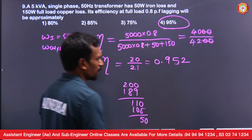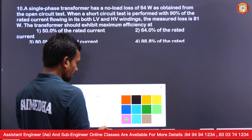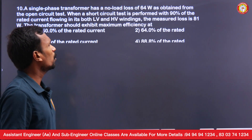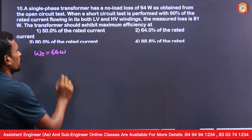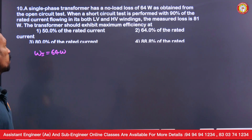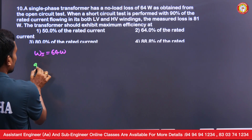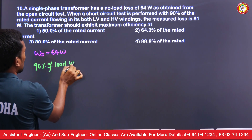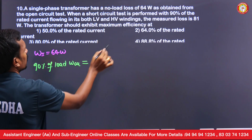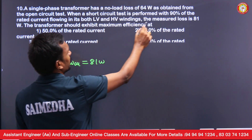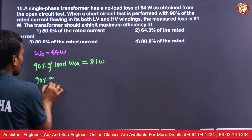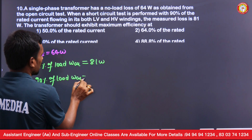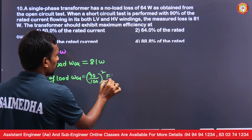Next question: a single phase transformer has no load loss (iron loss) of 64 watts from the open circuit test. When the short circuit test is performed at 90% of rated current, the measured copper loss is 81 watts. So at 90% load, copper loss = (0.9)²×full load copper loss = 81 watts.